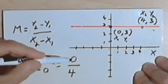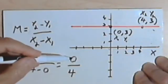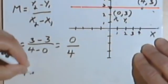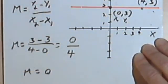If I have a fraction any time the numerator is 0, that means the fraction equals 0. So that means the slope is 0.